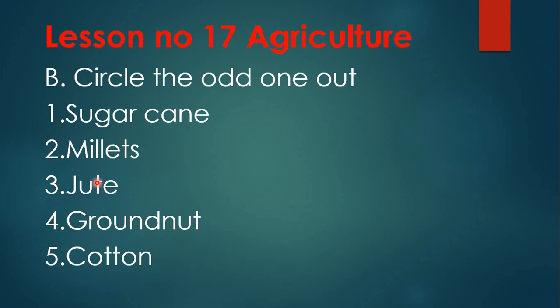Third group: cardamom, pepper, cloves, jute — jute is the odd one. Fourth group: moong, gram, groundnut — groundnut is the odd one. Fifth group: groundnut, sesame, sunflower, cotton — cotton is the odd one. So the odd ones are: sugarcane, millets, jute, groundnut, and cotton.